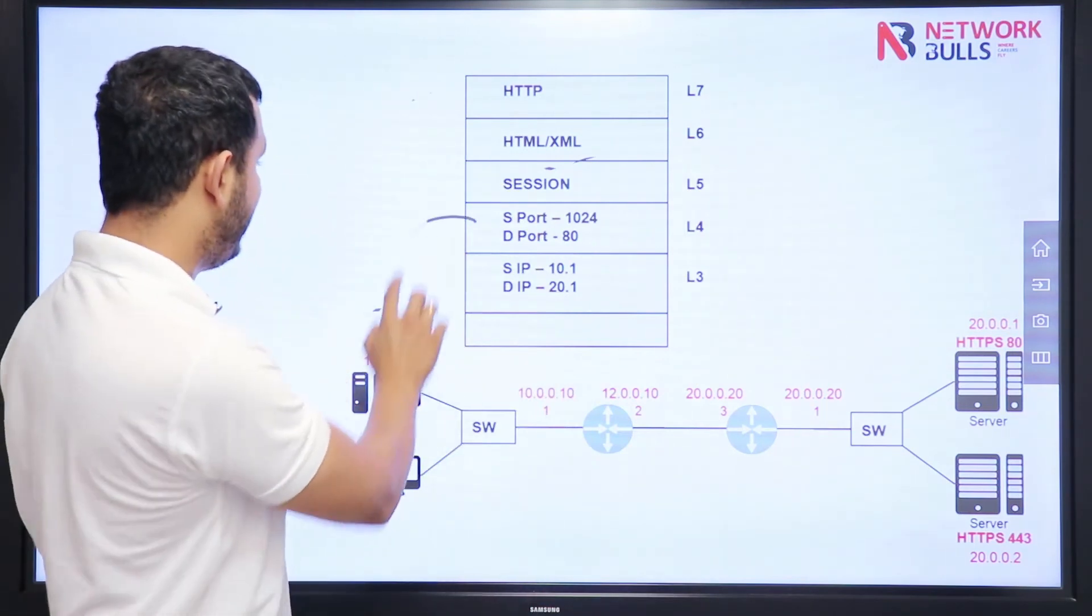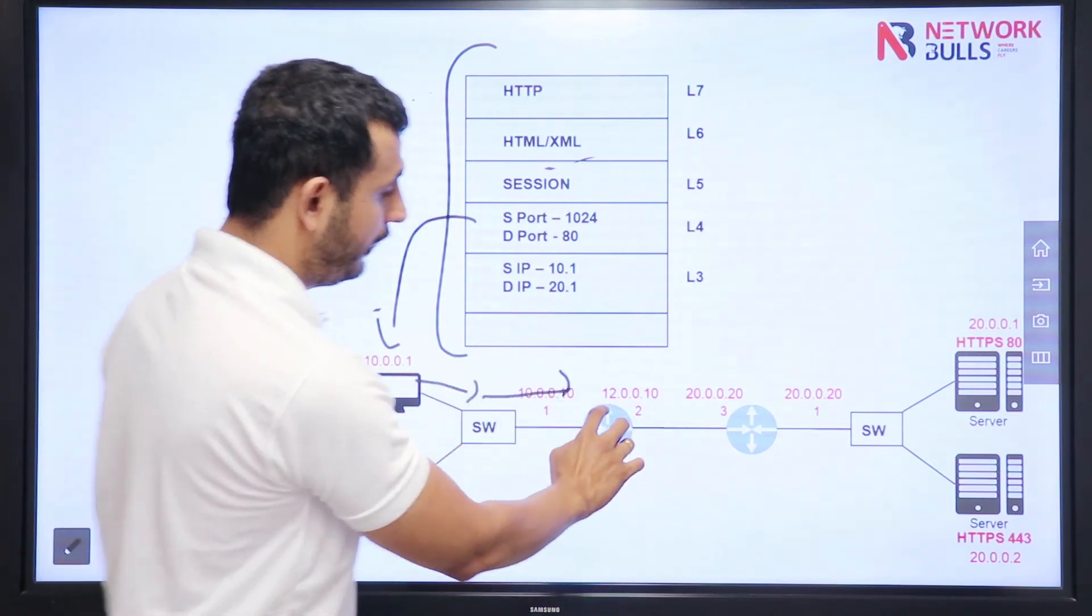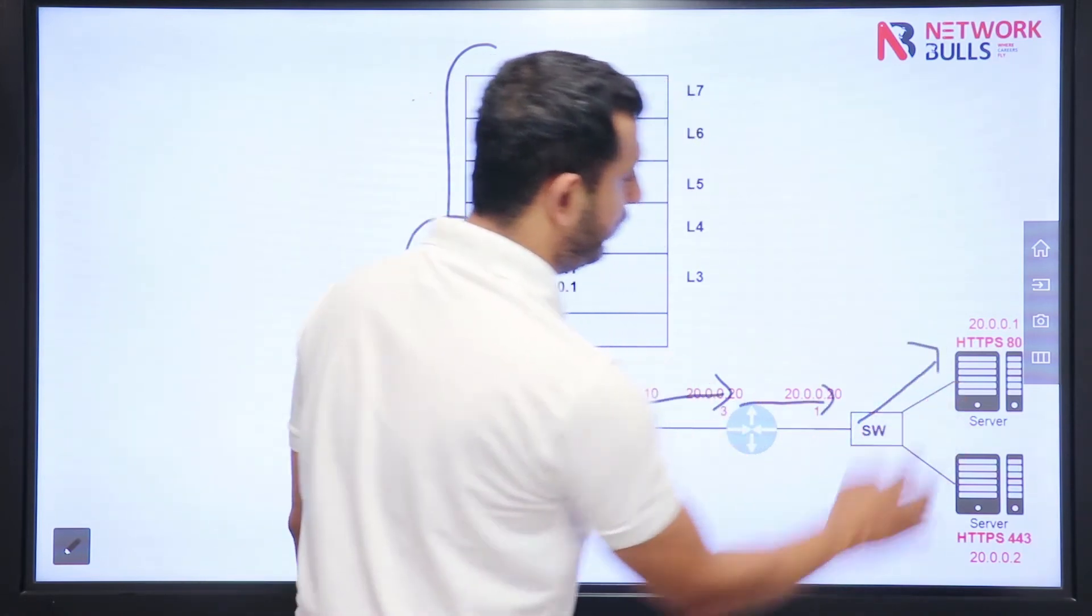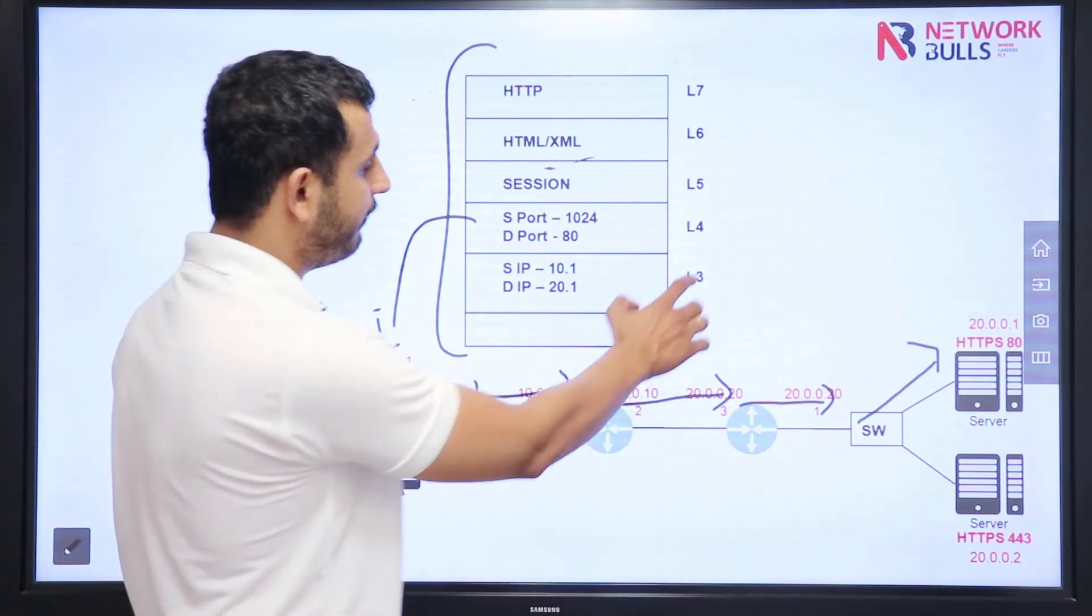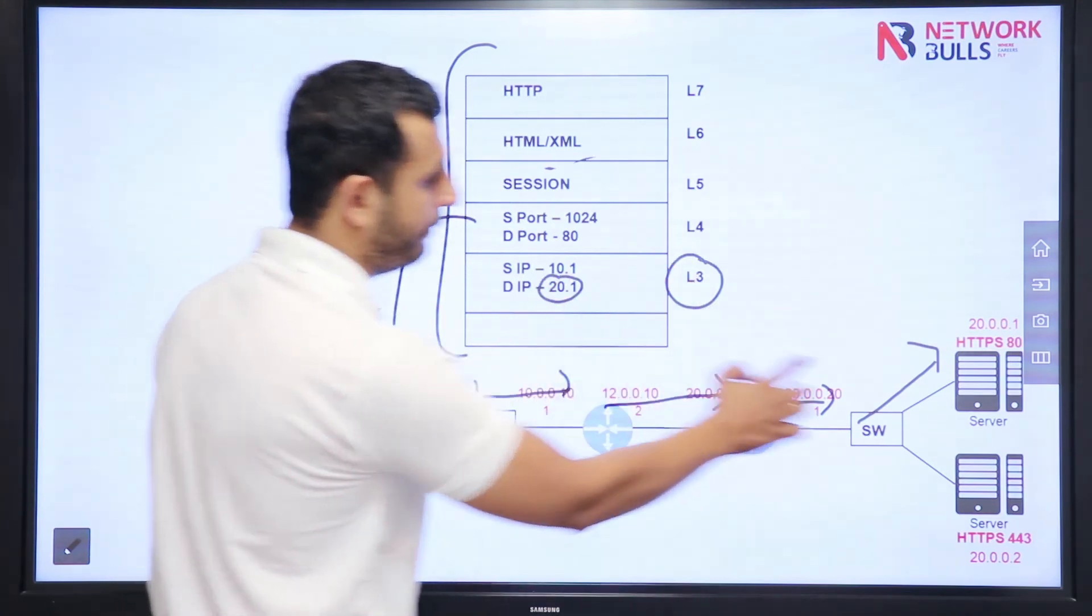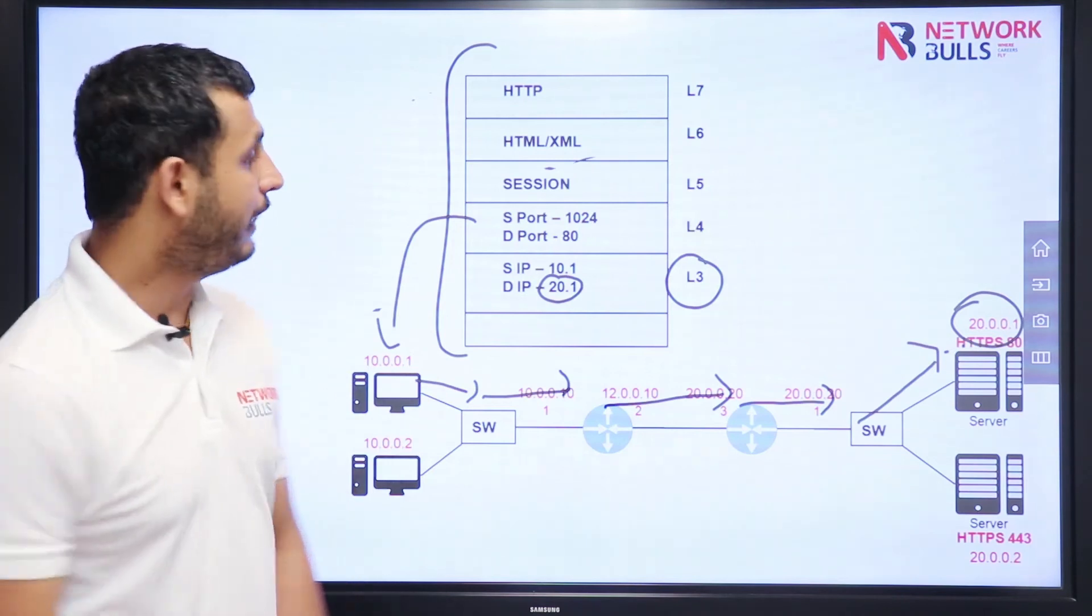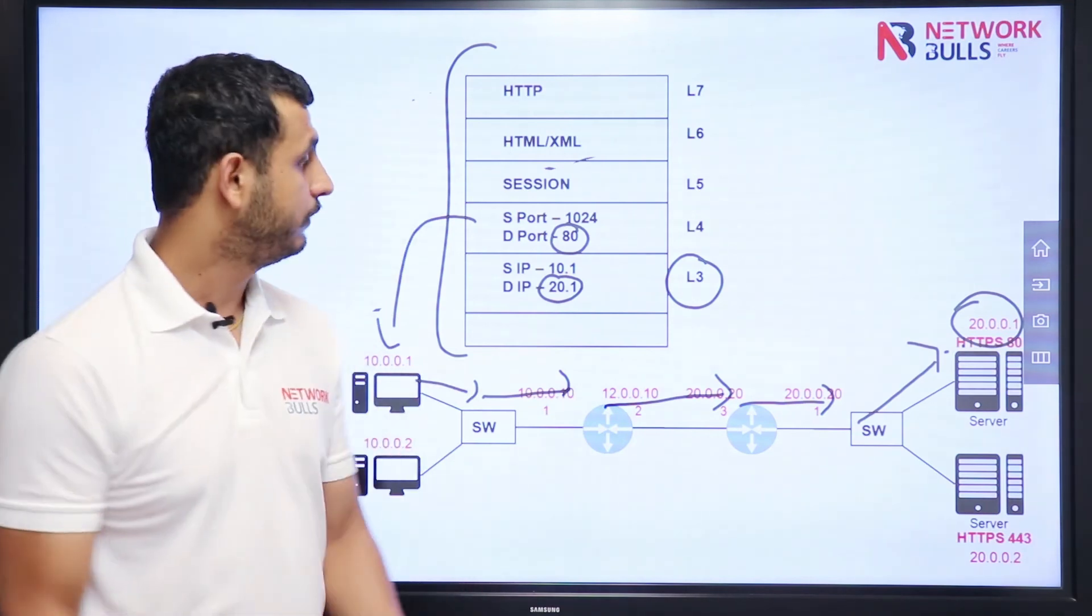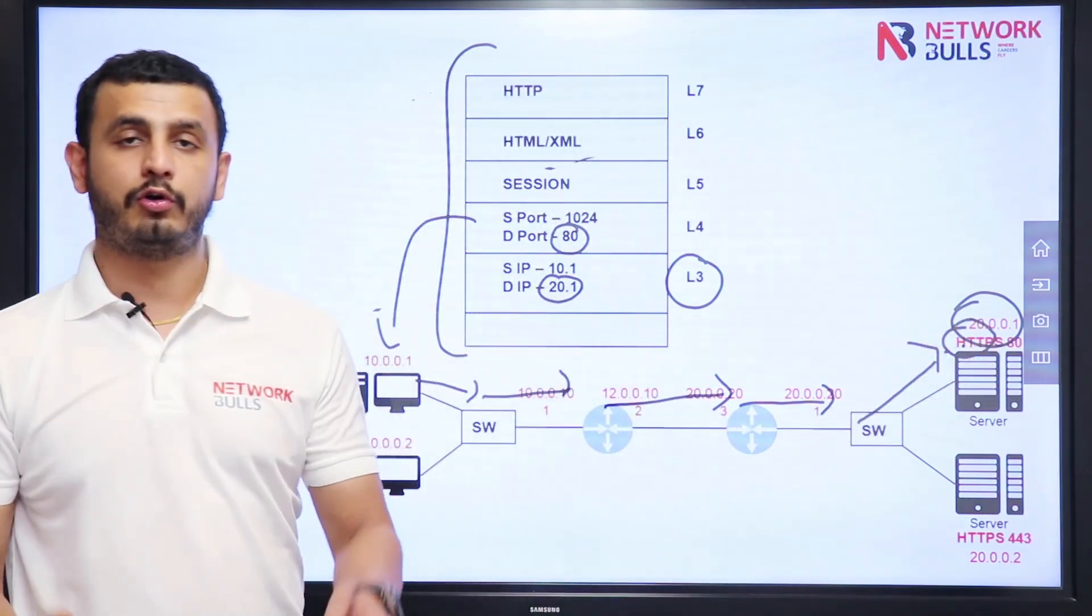Now what this computer will do is send this whole information to the switch, which will forward it to the router. Router will forward it to another router, router will forward it to switch, switch will forward it to server. Now server will decapsulate the information. How? First of all, server will check Layer 3—yes, destination IP is 20.1, my IP is also 20.1. It means this packet is for me. Now server will open the packet and it will see destination port is 80. It means this particular packet belongs to which protocol? HTTP.